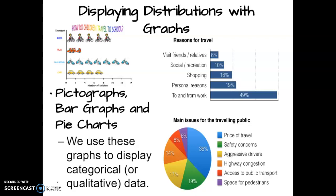The bottom graph is a pie chart, and this is always in percents. We take 100%, which represents everybody, and split it into pieces of the pie by percent. The blue piece of the pie is the largest, representing the most common issue — the price of travel — with 36% of people saying that was their main issue.